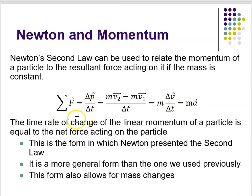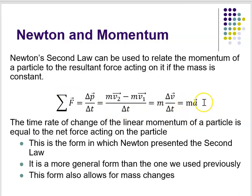So you can see that the F equals ma form of Newton's second law is equivalent to saying that it's equal to the change in momentum over the change in time if you have a constant mass. You could also express this as: the time rate of change of the linear momentum of a particle is equal to the net force acting on the particle. It's a little less familiar than F equals ma, which is how a lot of introductory textbooks refer to Newton's second law. But in fact, F equals delta p over delta t is the form in which Newton presented the second law.